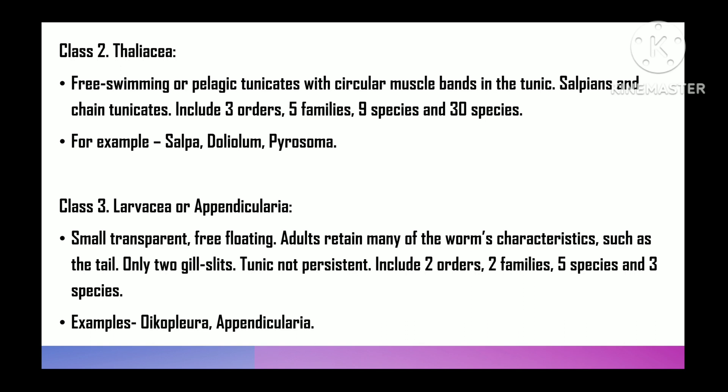Class 3 is Larvacea or Appendicularia. These tiny transparent free-floating adults retain many larval features including the tail. Only two gill slits are present; tunic not persisted. Includes two orders, two families, five genera, and three species. For example, Oikopleura and Appendicularia.